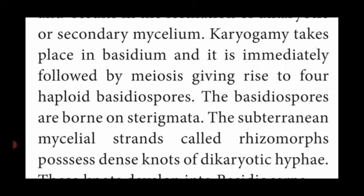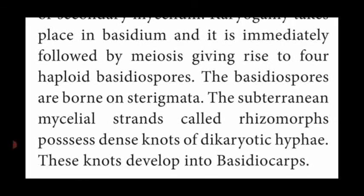All the dikaryotic hyphae in the form of knots present in rhizomorphs — these knots afterwards develop into basidiocarp. So basidiocarp is the fruiting body of Agaricus. It is produced from the dikaryotic hyphae present in the knots of rhizomorphs. These dikaryotic hyphae develop into an Agaricus fruiting body named basidiocarp.